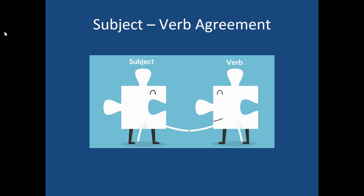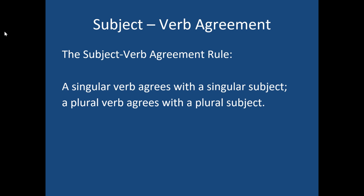Today we're going to review our work on subject-verb agreement, so follow along with your note sheet. Subject-verb agreement has a basic rule where the singular verb has to agree with a singular subject and a plural verb has to agree with a plural subject, which seems straightforward. So let's talk about what we mean.